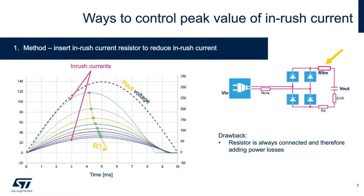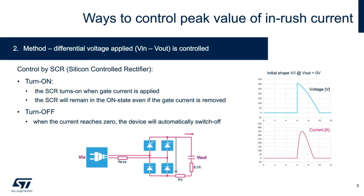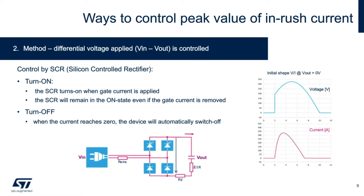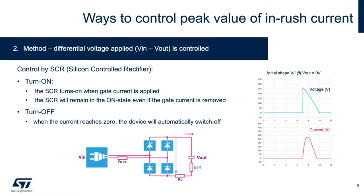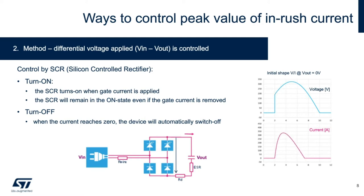But first, let's peek at an active way to limit inrush current. The main topic of this webinar is control of inrush current by controlling the differential voltage applied across the front end of the power supply itself, in particular by means of intelligently firing a silicon-controlled rectifier, or SCR. A timed gate current will turn on the SCR, which displaces a traditional diode in a rectifying bridge, and the SCR will remain on until the current reaches the zero crossing of the AC cycle, at which point the SCR automatically switches off. In this fashion, we can control how much of the input AC voltage is applied and control the amount of energy in any given line cycle that is transferred to the bulk capacitance of the power supply.